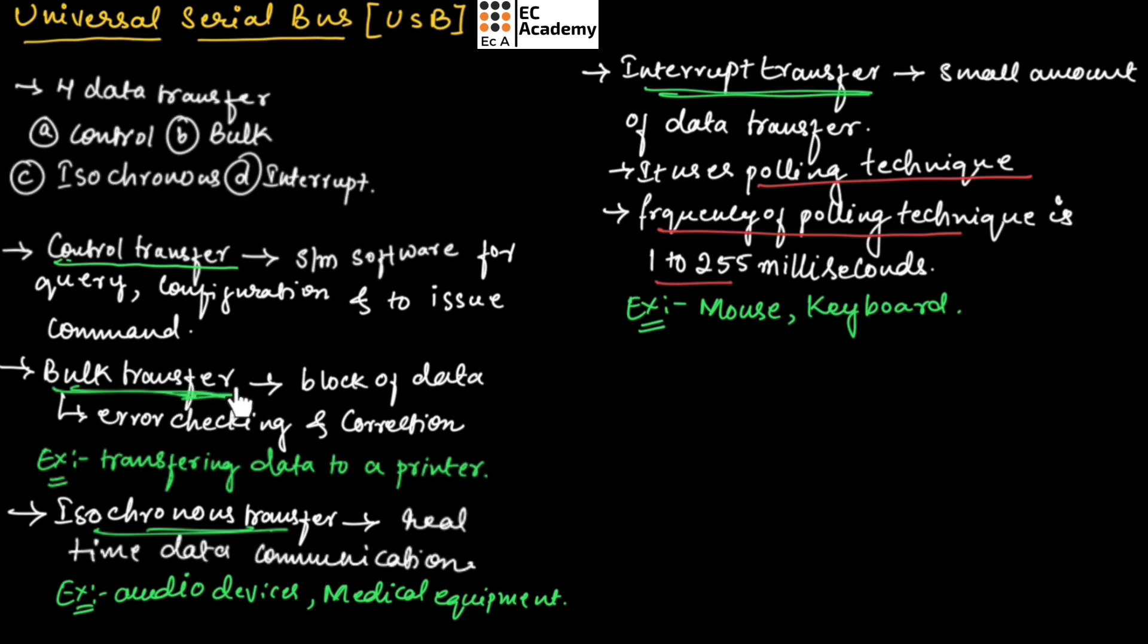Next is bulk transfer. It is used for transmitting bulk of data, for large number of data transfer. It is also used for error checking and correction. For example, transferring data to a printer, where bulk data is transmitted from USB to the printer.